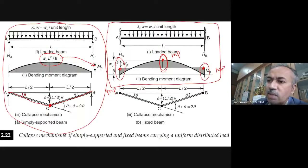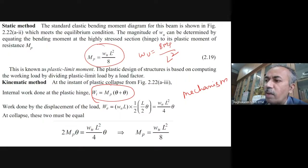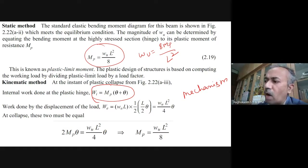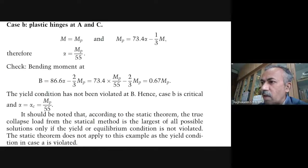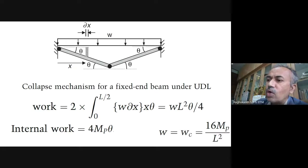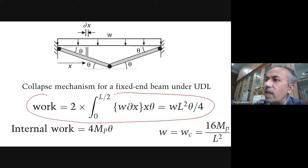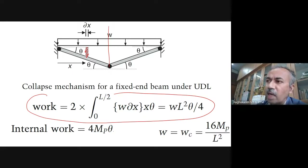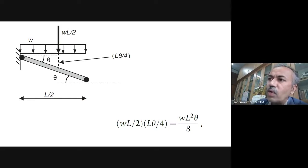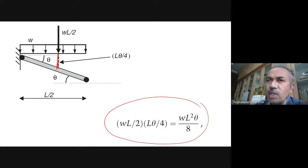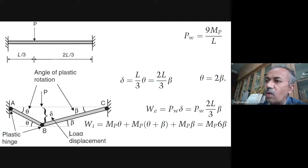Both static and kinematic methods give the same answer. In the static method, you solve equilibrium and get the bending moment diagram, equate hinge locations to MP; in the kinematic method, you identify the collapse mechanism and equate internal work to external work. It is like eigenvalue-eigenvector: you first solve for eigenvalue and then eigenvector, or assume eigenvector and find eigenvalue. The kinematic approach is extremely easy.